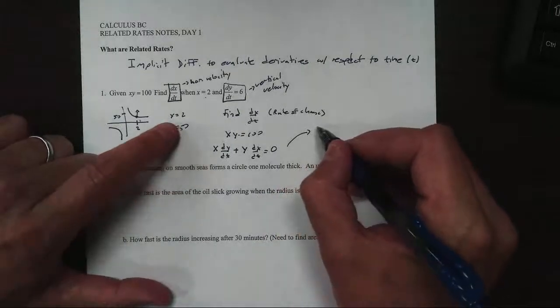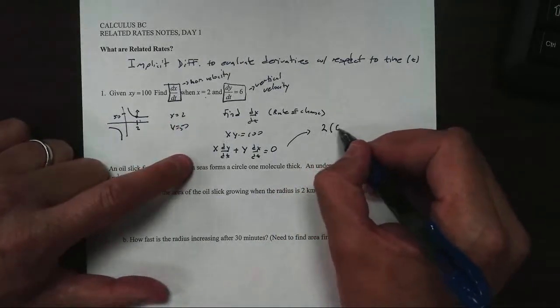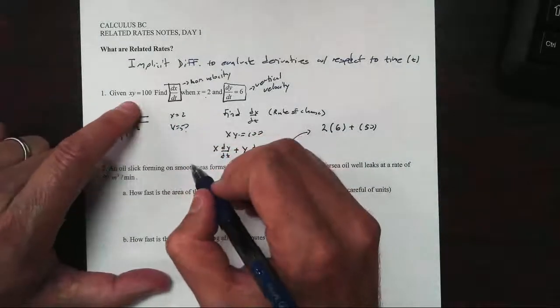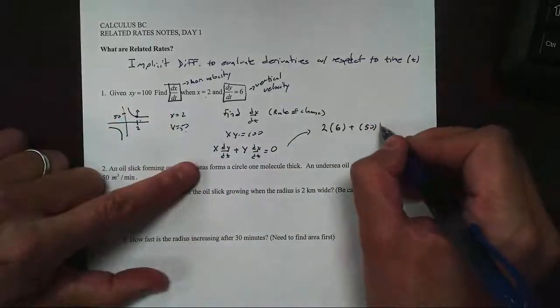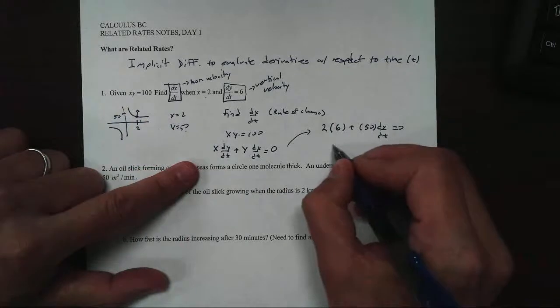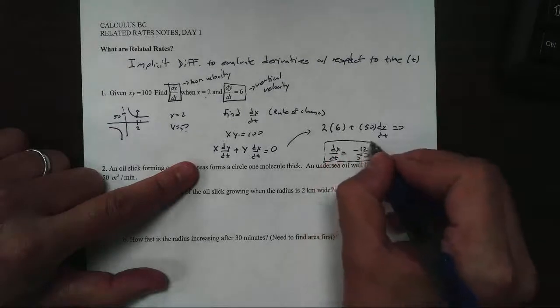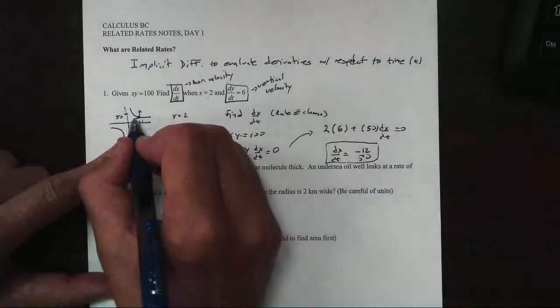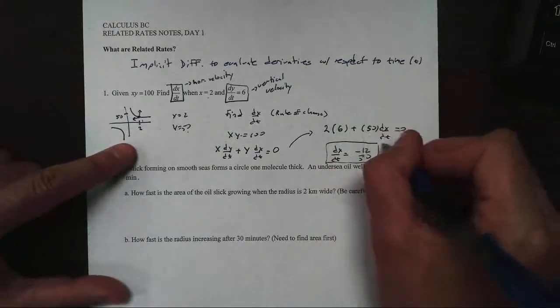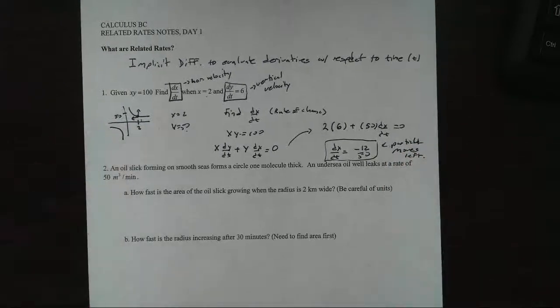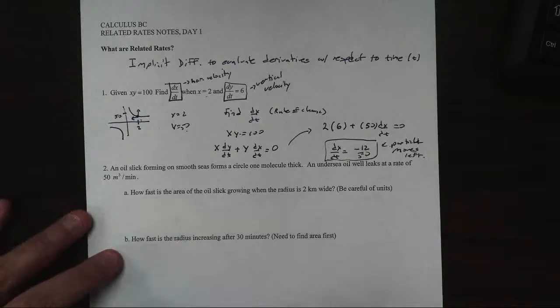Once I get here, I can just substitute in. We know x is 2, dy/dt is 6, plus y we found to be 50 because 2 times 50 is 100. So dx/dt, we get negative 12 over 50. What that's telling us is yes, it's moving up, but it's also moving to the left. So this is telling me that the particle moves to the left. Very easy to work these.